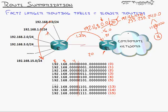This summarization example is perfect, but in the real world, what if our organization just added 192.168.16.0 behind Router 1? That totally goofs things up, because 16 in binary is 00010000 — it no longer fits within the /20 summary that covers only 0 through 15.